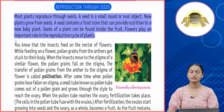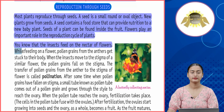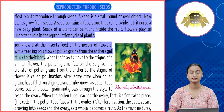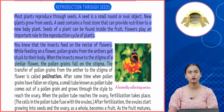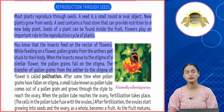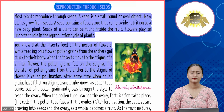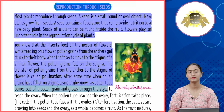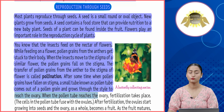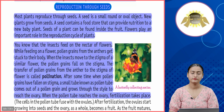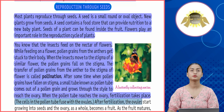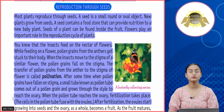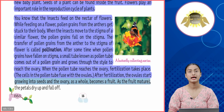Insects feed on the nectar of flowers. As they do so, pollen grains from the anthers get stuck to their bodies. When insects move to the stigma of a similar flower, the pollen grains fall on the stigma — this transfer is called pollination. After pollination, a pollen tube grows through the style to reach the ovary, where fertilization takes place. The cells in the pollen tube fuse with the ovules, which then start growing into seeds, while the ovary becomes a fruit.